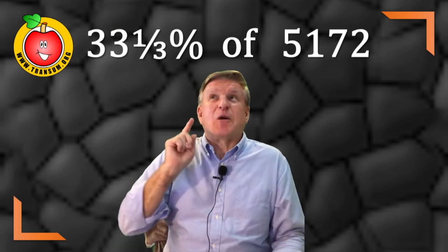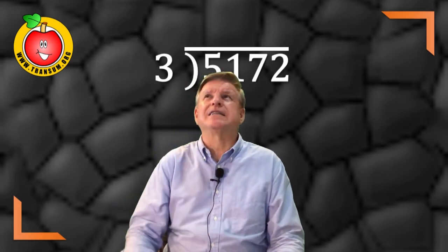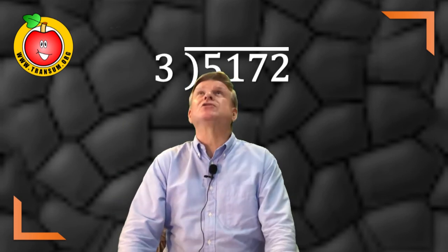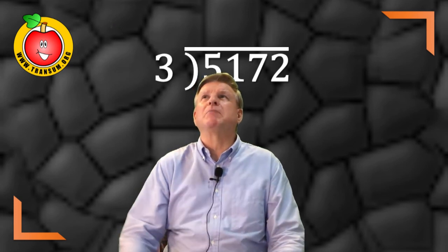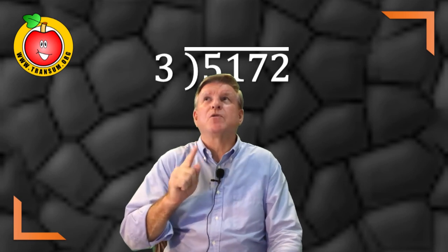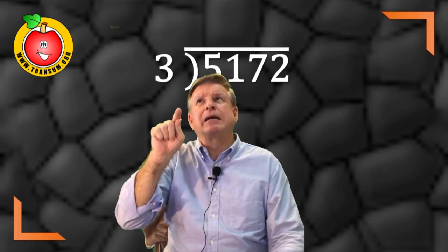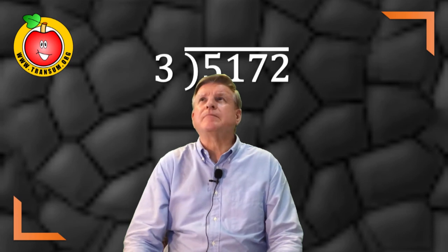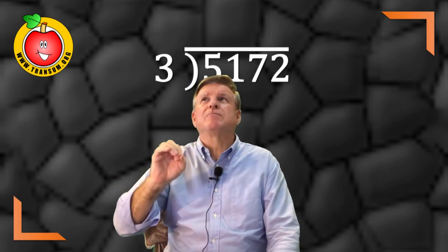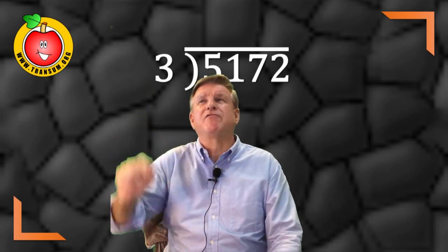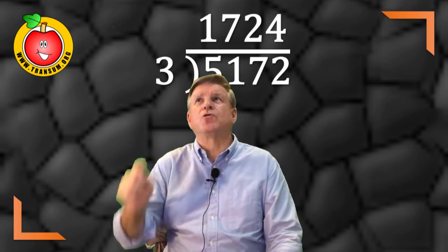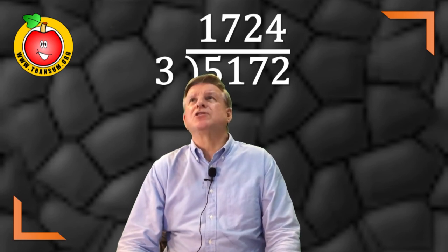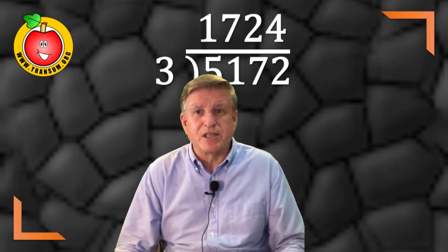You imagine in your mind that you are dividing that number by three. Put that bus stop sign over the top of the 5172. Then divide it by three bit by bit. Threes into five goes one time with two left over. So that one makes the final number 12. So threes into 12 goes four times. So 33 and a third percent of 5172 is 1724. Phew!